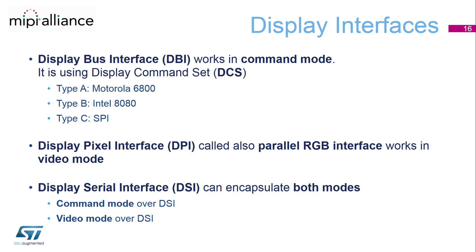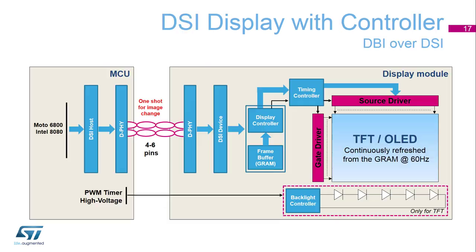The display bus interface, or DBI, works in command mode using the display command set — it covers the Motorola, Intel, and SPI interfaces mentioned before, naming them type A, B, and C. The display pixel interface, DPI, is the parallel RGB interface and works in video mode. And finally, the display serial interface can encapsulate both modes — either command mode over DSI or video mode over DSI. The main advantage of the DSI interface is on the number of pins it requires. Since it's a serialized interface, it only requires from 4 to 6 pins, but is still able to handle both parallel and serial mode.